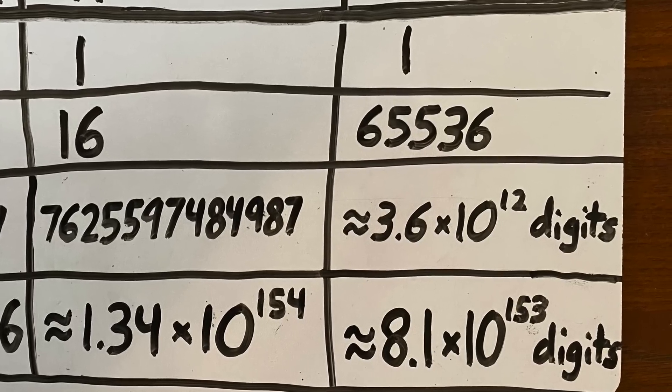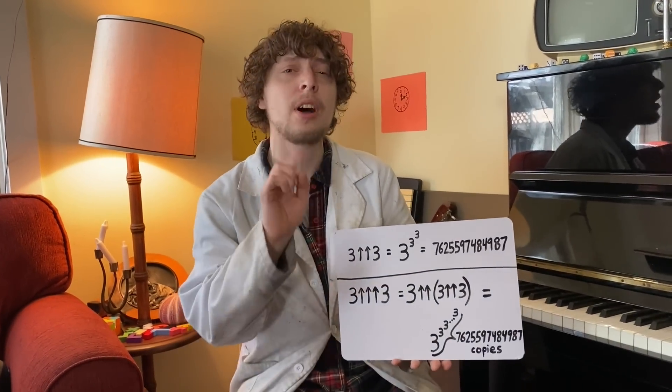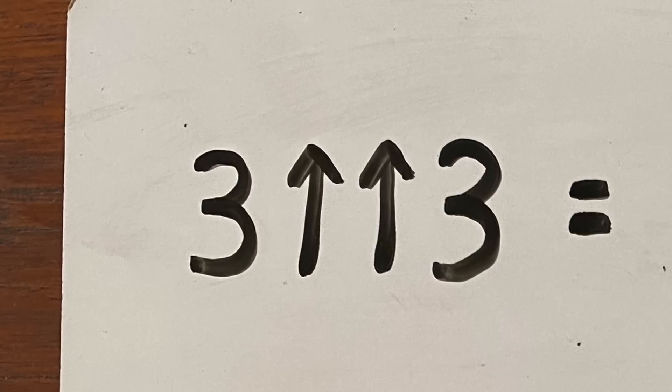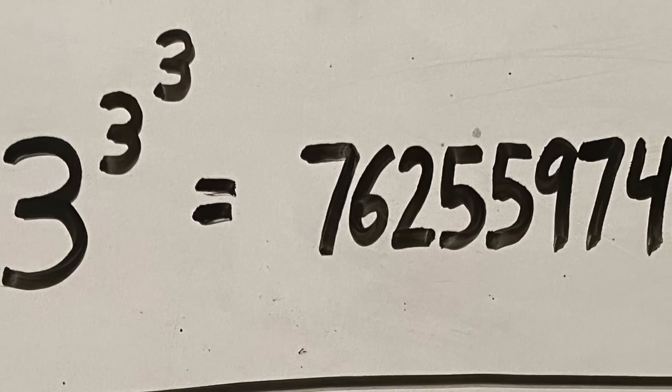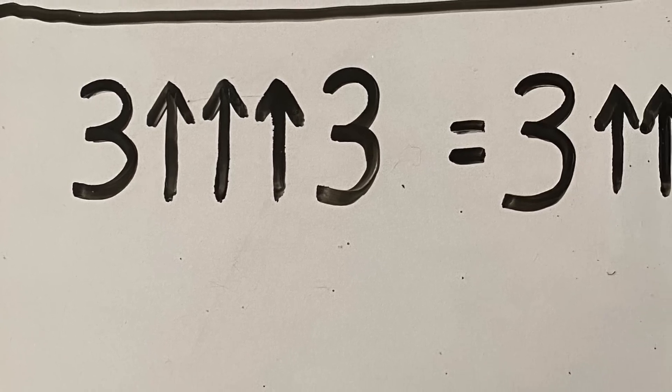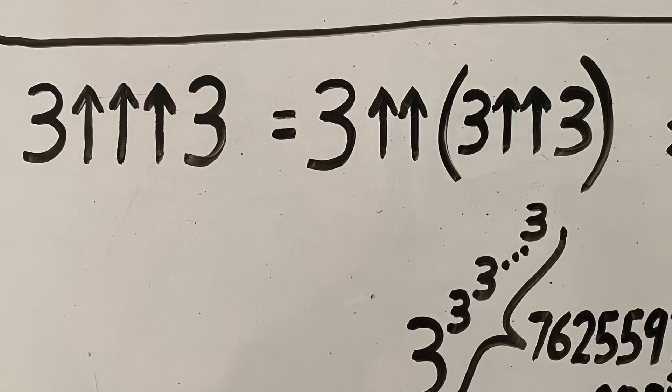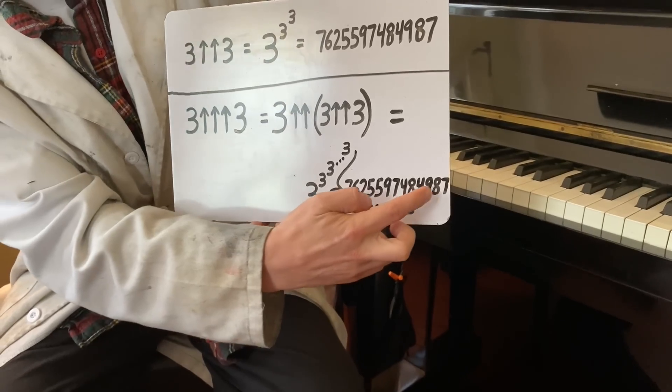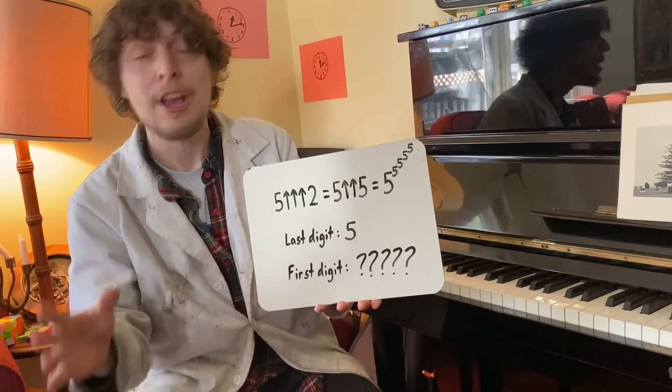Now let's take a brief peek at the level beyond tetration, pentation, and see how absurdly large that would make numbers. So three tetrated three, which we're using the arrow notation now to make it more similar to future levels, is that massive number. Well, three pentated three ends up breaking down to three tetrated to the amount of three tetrated to three. So we have a stack of three to the three to the threes that's that many copies tall.